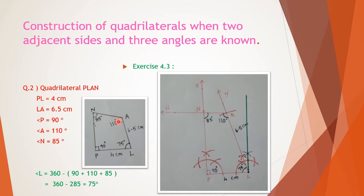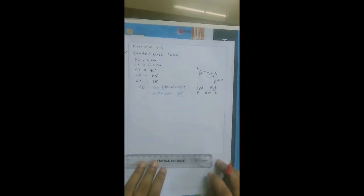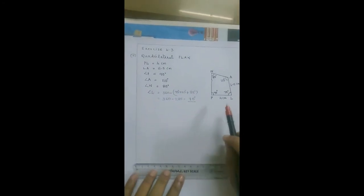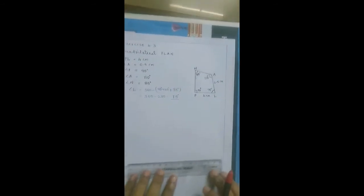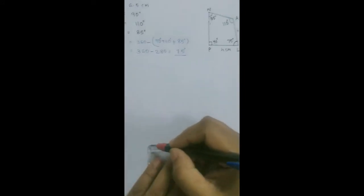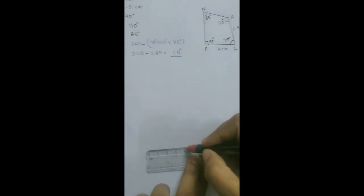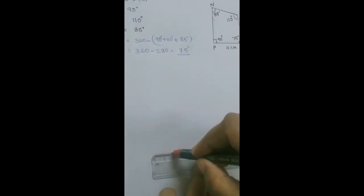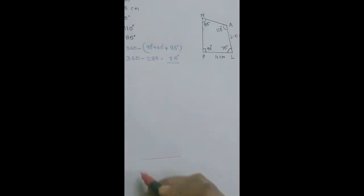Let us start constructing the quadrilateral PLAN. First, draw line segment PL. Its length is 4 cm. Take one point P, mark 4 cm, place another point L, and join the points. Label it PL.